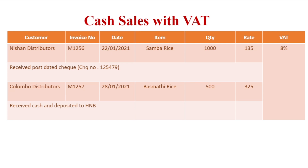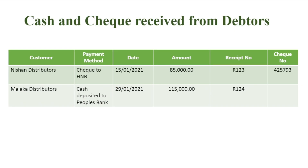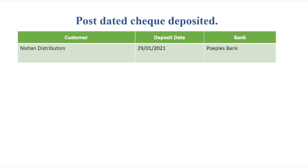This is the cash and check receipt from debtors. If we have customers, we have cash or checks. This is the database. This is the payment method. This is the date, amount, receipt and check. This is the bank. This is the post-dated check deposit.